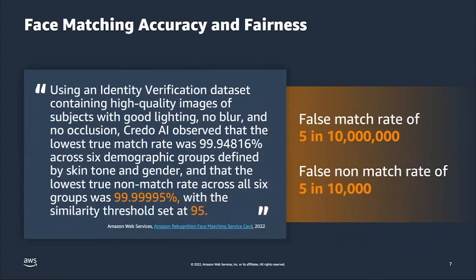Before covering our face matching solutions, it's worth noting that proving a face matching solution is not only accurate but also fair is critical for identity verification workflows — making sure the workflows work well across all end users. We recently had a third-party service called Credo AI, a responsible AI company, evaluate our latest version six face matching APIs across six demographic groups defined by skin tone and gender. That evaluation showed a maximum error rate of five in ten million for false matches and five in ten thousand for false non-matches across all six groups, which is industry-leading. This information is available on our public website on the Rekognition face matching service card.